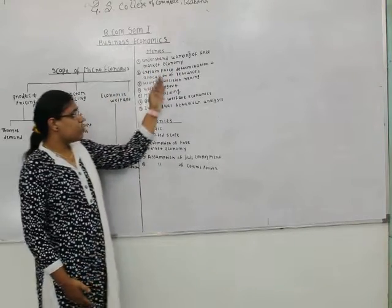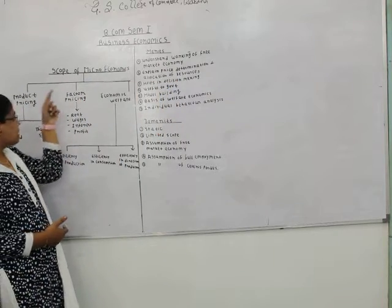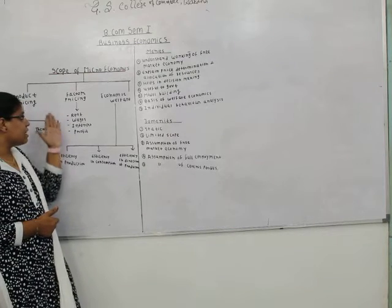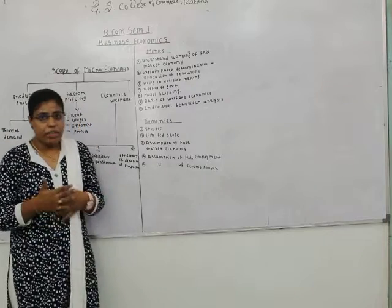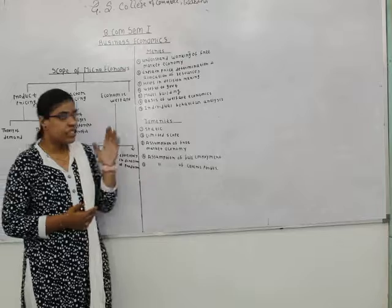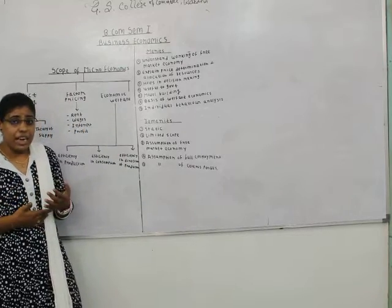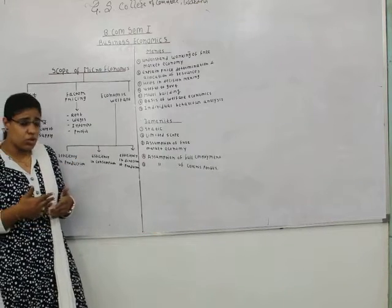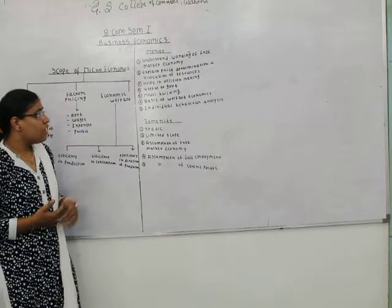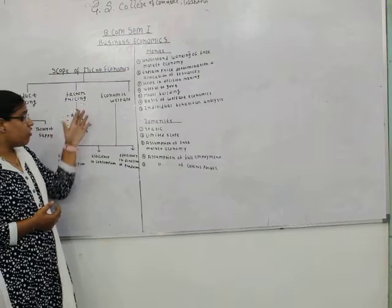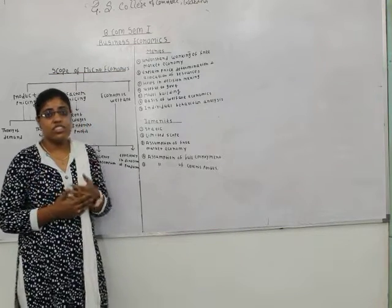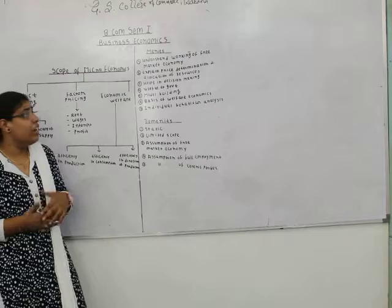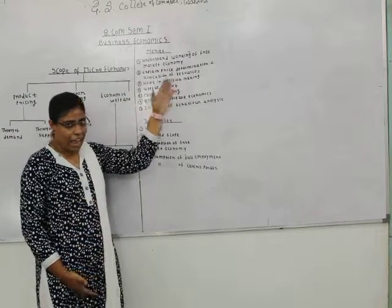The second merit is that it explains price determination and allocation of resources. As seen in the scope, microeconomics covers product pricing and factor pricing. It helps determine the prices of commodities in the market and the prices of factors of production using various theories so that business can be in a win-win situation. It also deals with allocation of resources to maximize satisfaction, maximize output, and minimize wastage of resources.